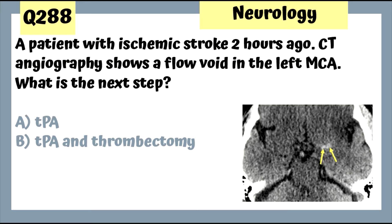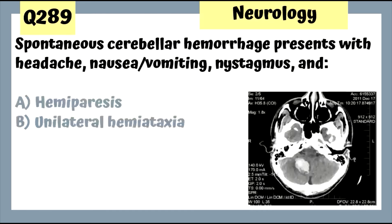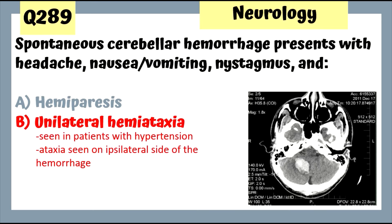Question 288: A patient with ischemic stroke two hours ago; CT angiography shows a flow void in the left MCA — there's a clot, so we need to do both TPA and thrombectomy. Question 289: Spontaneous cerebellar hemorrhage presents with headache, nausea, vomiting, nystagmus, and unilateral hemiaxia. Cerebellum equals balance problems; seen in hypertensive patients; ataxia on the ipsilateral side of the hemorrhage.